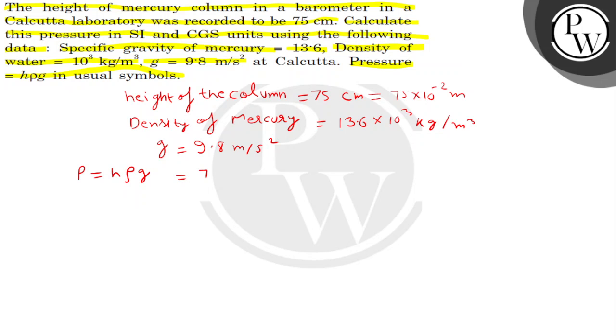How much will it be? 75 into 10 to the power minus 2 into rho is 13.6 into 10 to the power 3 into g that is 9.8. This will be 9.960 Newton per meter square. Approximately, this value is 10 into 10 to the power 4 Newton per meter square.